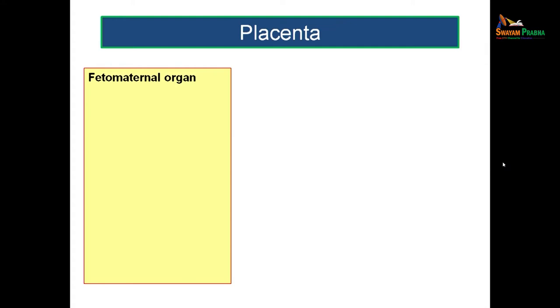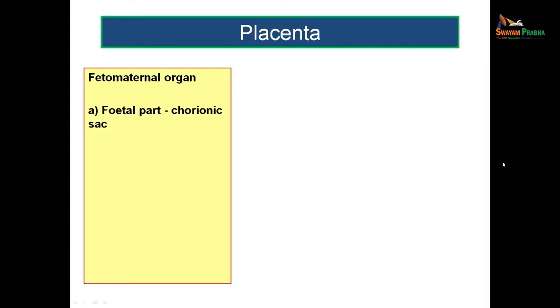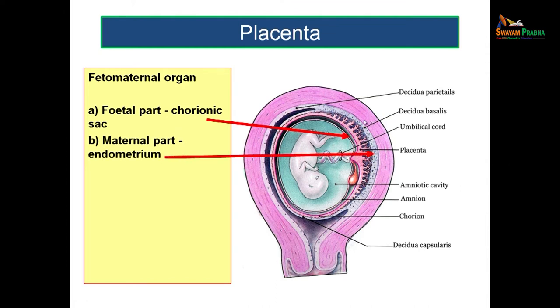Placenta is considered as a fetomaternal organ, meaning the structure which connects the fetus with the mother. As the word implies, there will be a fetal part — a part of the chorionic sac — and a maternal part that belongs to the endometrium. This region of the placenta will be the maternal part and this region belongs to the fetal portion, which is actually part of the chorionic sac.